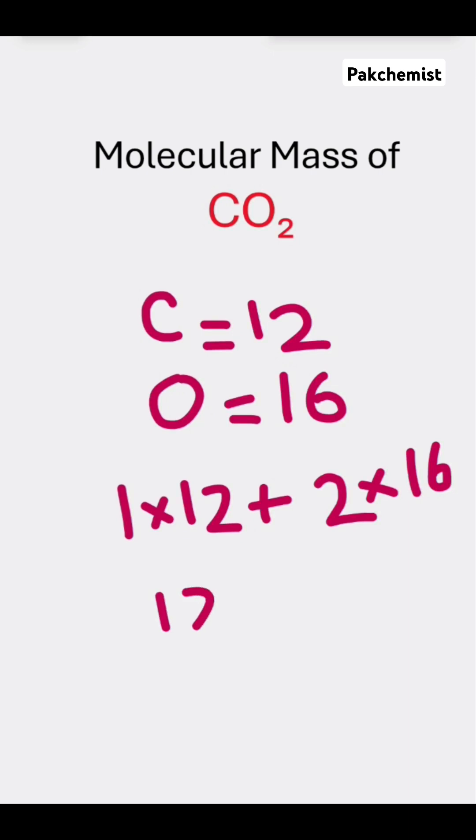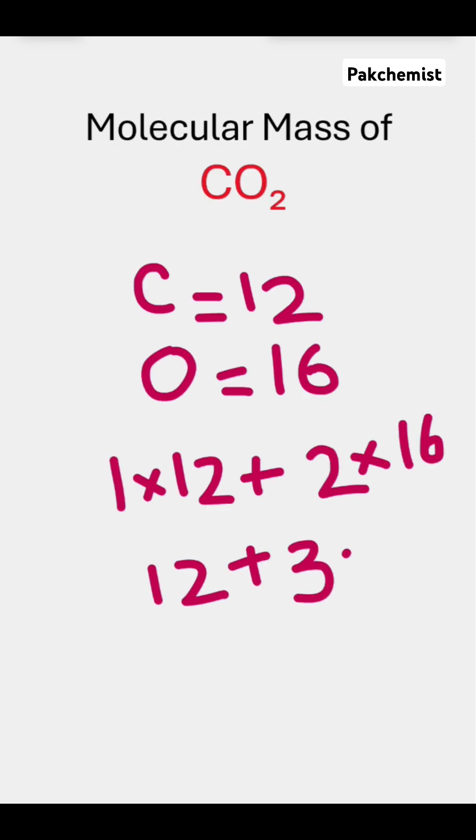Now, 1 multiply 12 is 12, plus 2 multiply 16 is 32. Now, adding both of them, you will get 44 as the molecular mass of carbon dioxide.